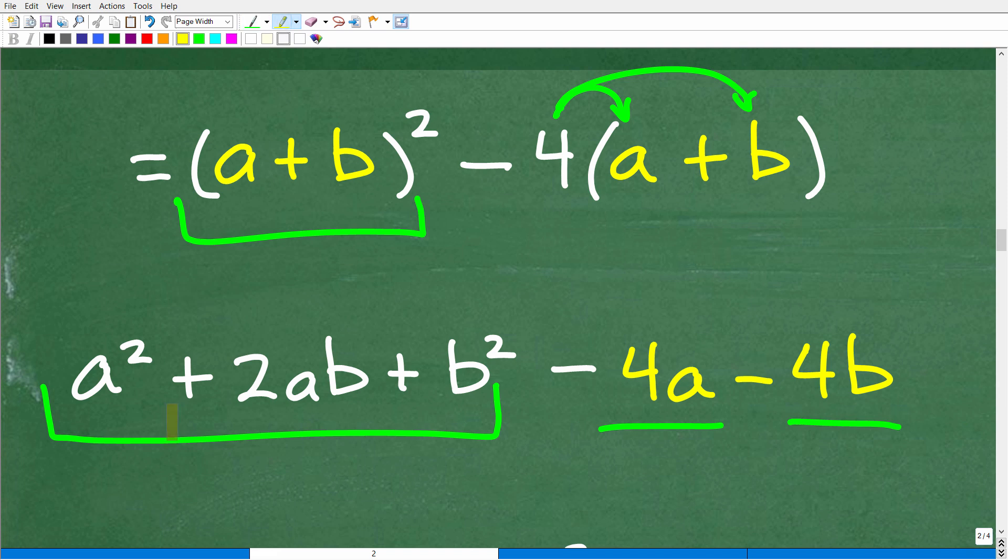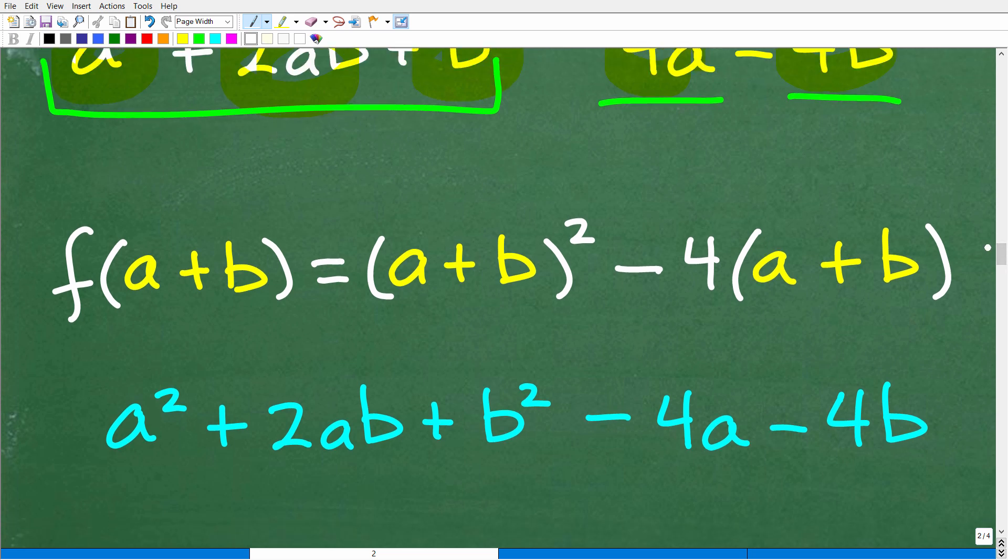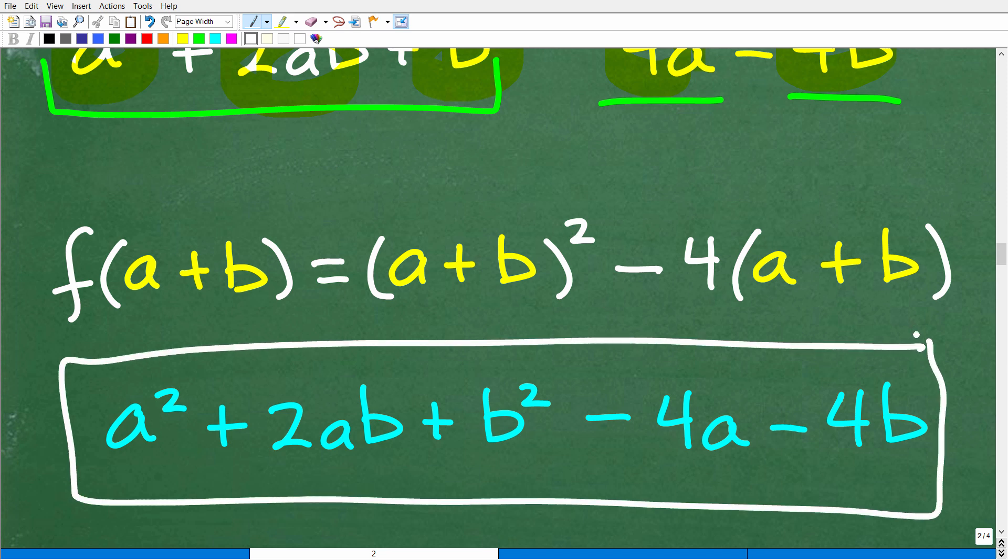Okay, so let's go ahead and scan this polynomial to see if there's any like terms. We have an a² here. Well, we have no other a²s. ab here. We don't have any more abs. We have a b² here. No other b²s. This is an a. This is a b. So this is actually our final answer. Okay, so here again is our function f(a + b) of this particular function is (a + b)² - 4 times (a + b). And the final answer is this: a² + 2ab + b² - 4a - 4b.